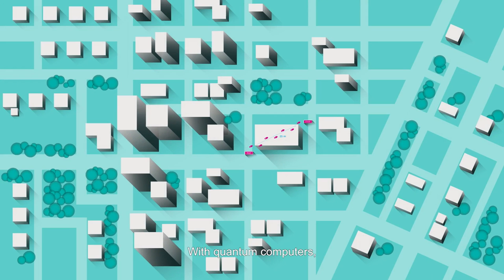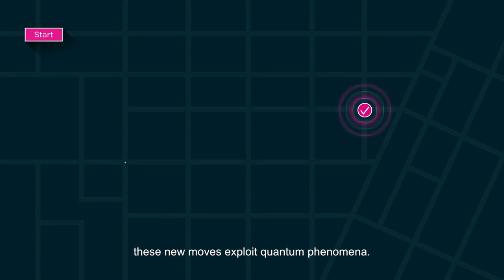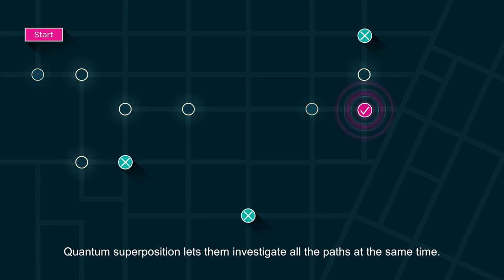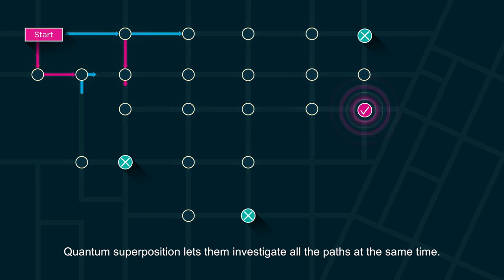With quantum computers, these new moves exploit quantum phenomena. There are different paths to get to the right answer and to the wrong answers. Quantum superposition lets them investigate all the paths at the same time.